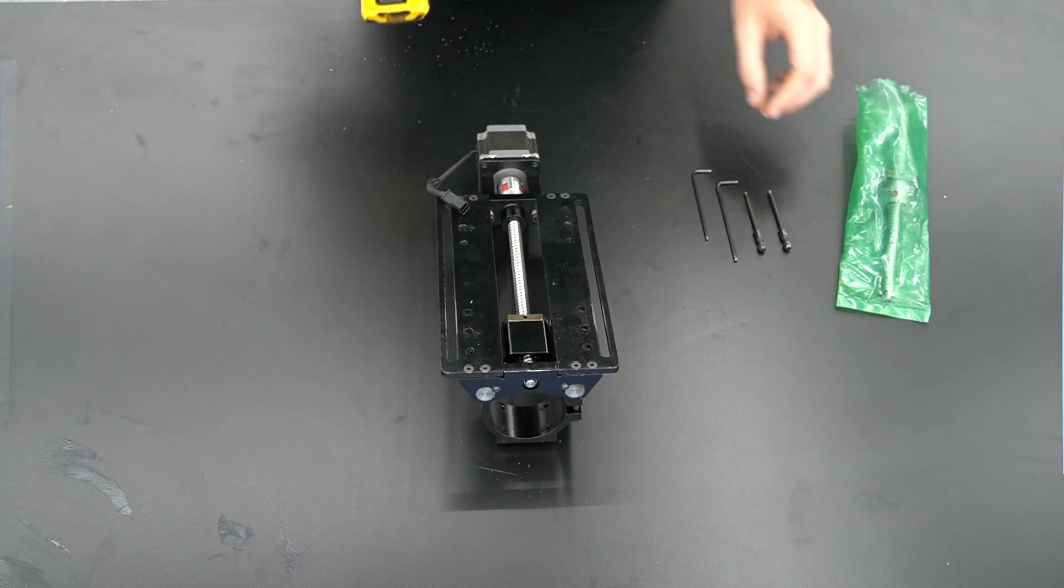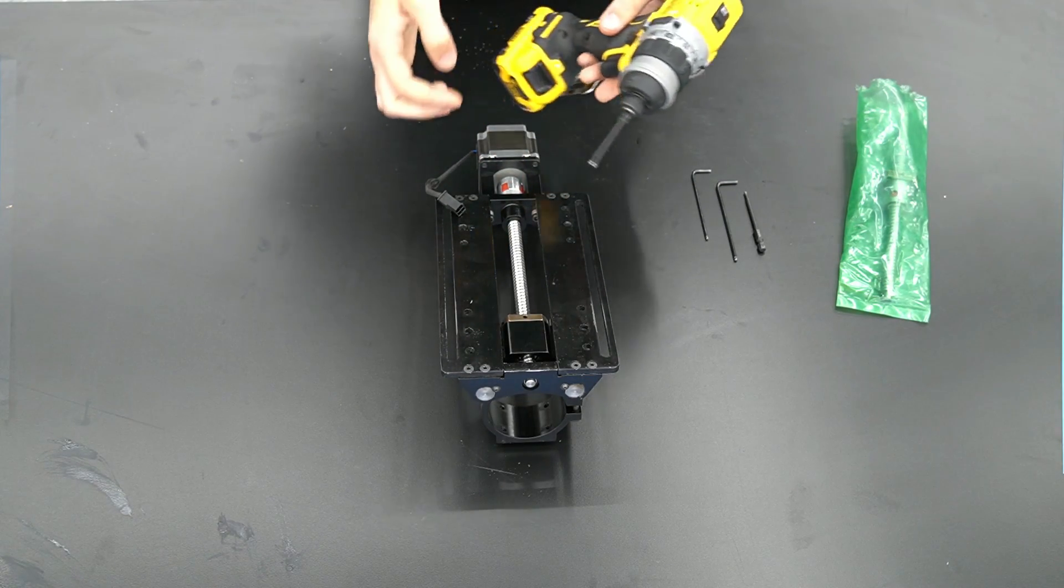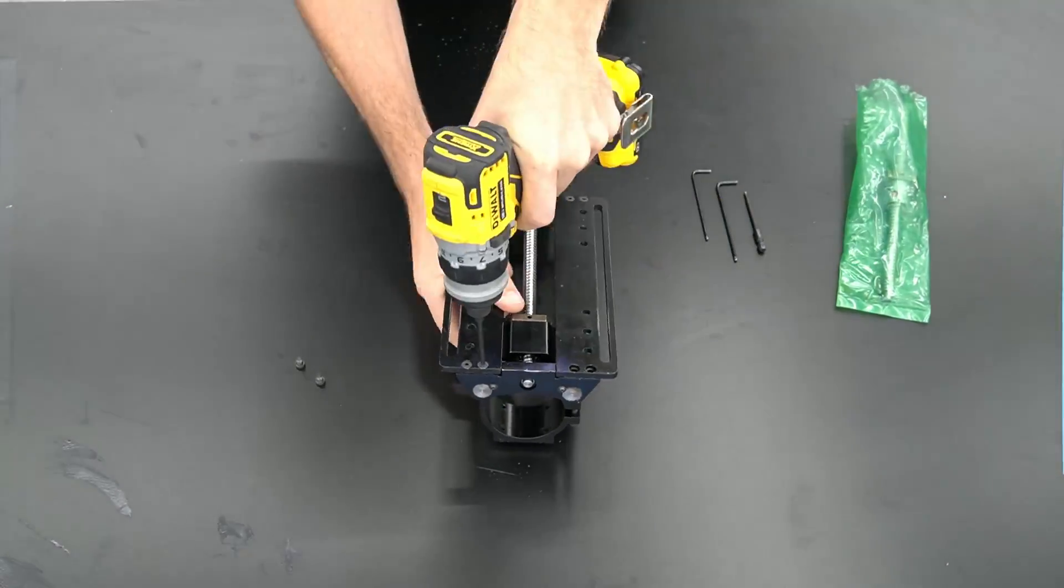With the front of the Z slider face down on a table, we can remove the eight bolts from the back of the Z slider, removing the mounting plates.